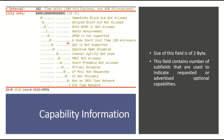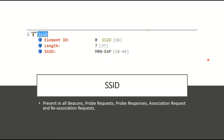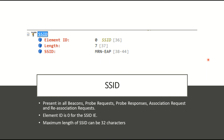The SSID element ID is 0. In this example, the length is 7 because there are seven characters in the SSID. This field is present in all beacons, probe requests, probe responses, association requests, and reassociation requests. The maximum length of an SSID can be 32 characters.